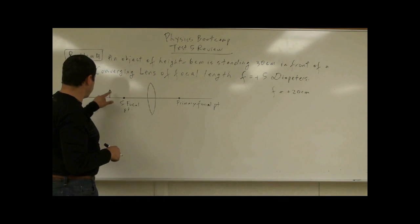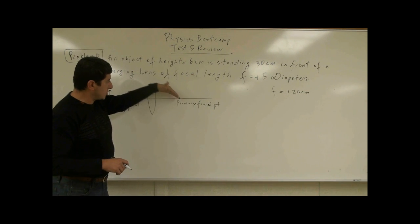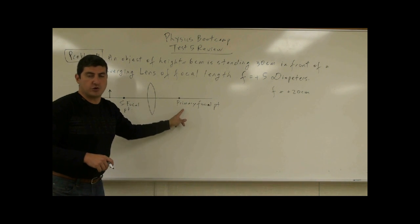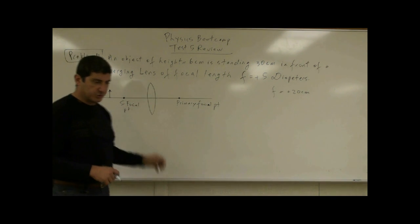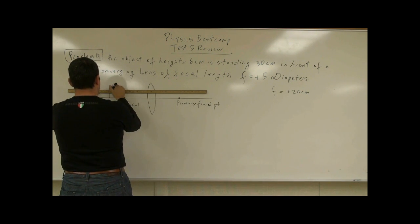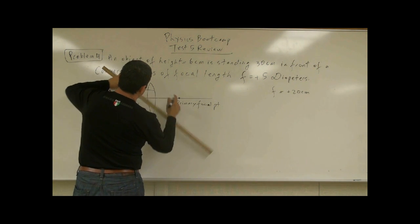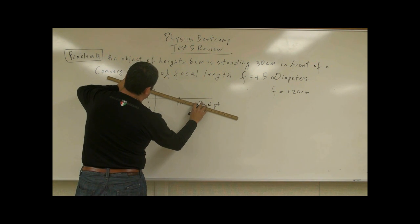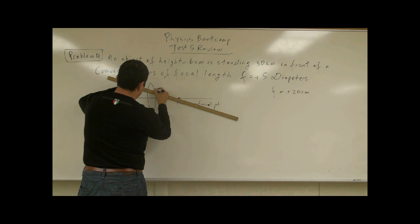How do we do the ray diagrams for this one? For this one, you draw a straight ray, and this time instead of diverging outward it converges inward and goes through the primary focal point — whereas with a diverging lens it looked like it was coming from the primary focal point. So this ray goes inward and actually passes through the primary focal point on the other side.